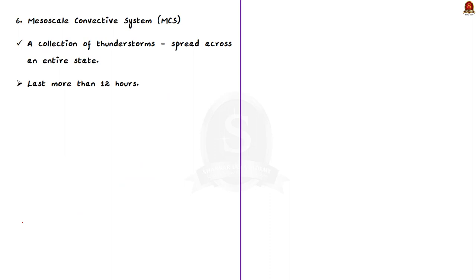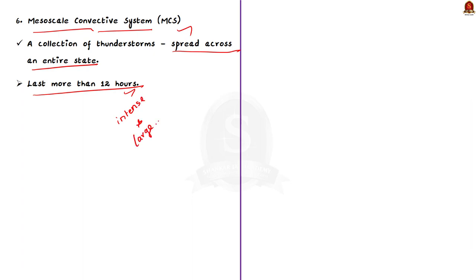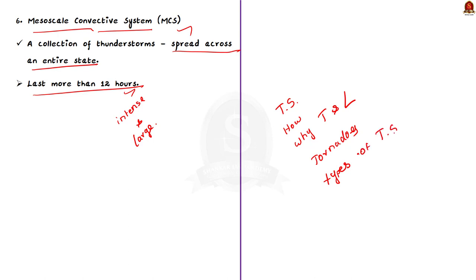The last type of thunderstorm grouping is the mesoscale convection system. This is a collection of thunderstorms that can spread across an entire state and last more than 12 hours. So this is the largest and most intense thunderstorm. These are the types of thunderstorms you need to know for your prelims examination. Quick recap: we saw what thunderstorms are, how they are formed, why thunder and lightning are associated with them, why tornadoes form, and the different types — single-cell, multi-cell, squall lines, supercell, and mesoscale convection system.